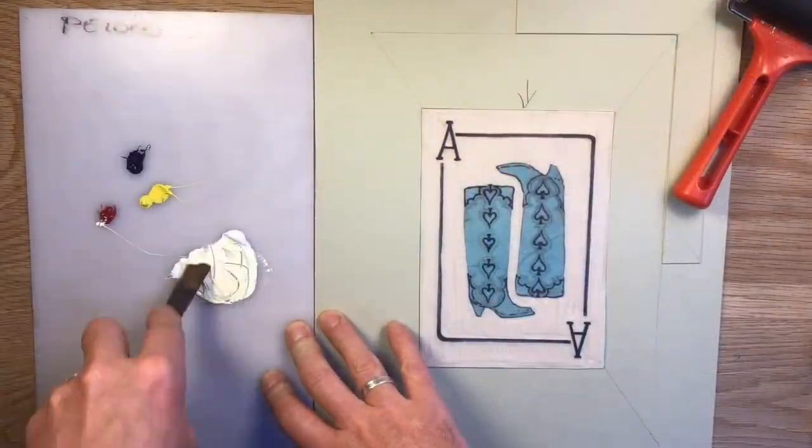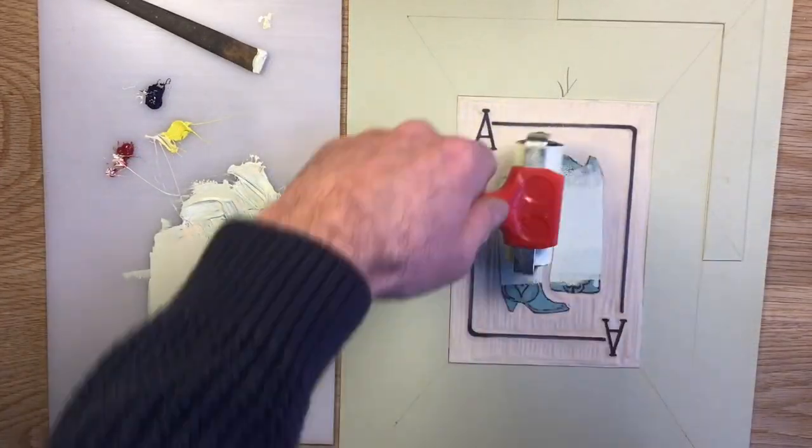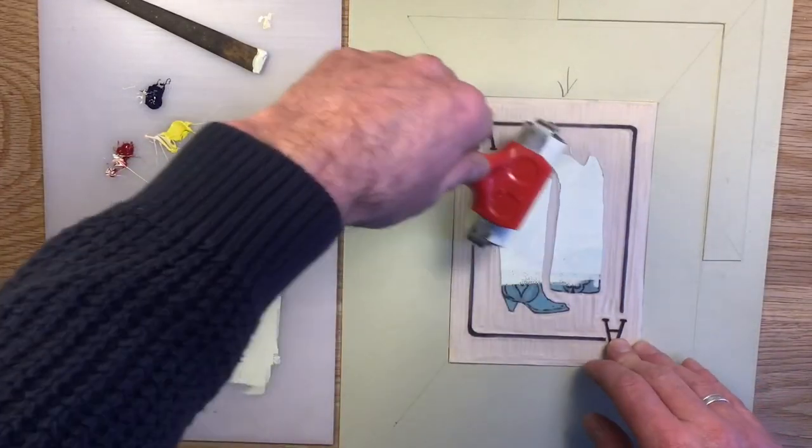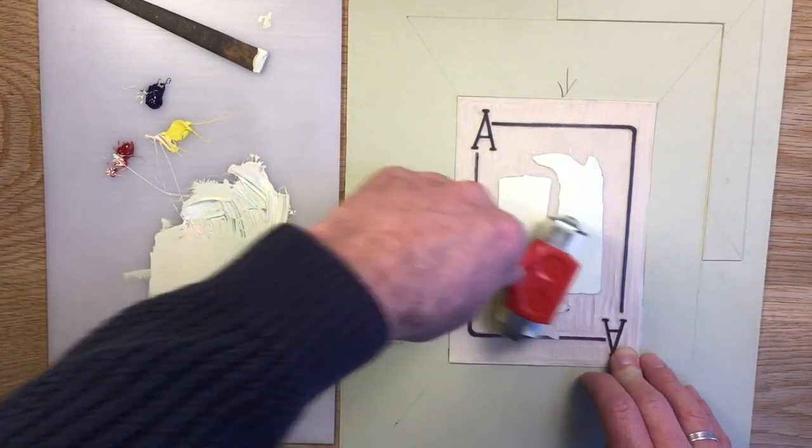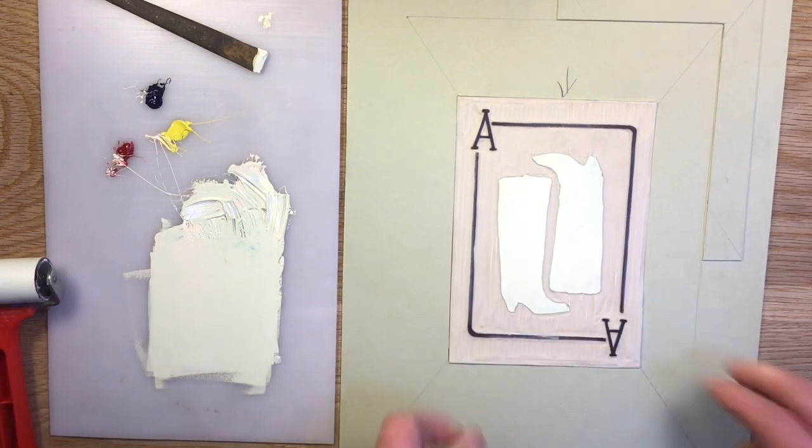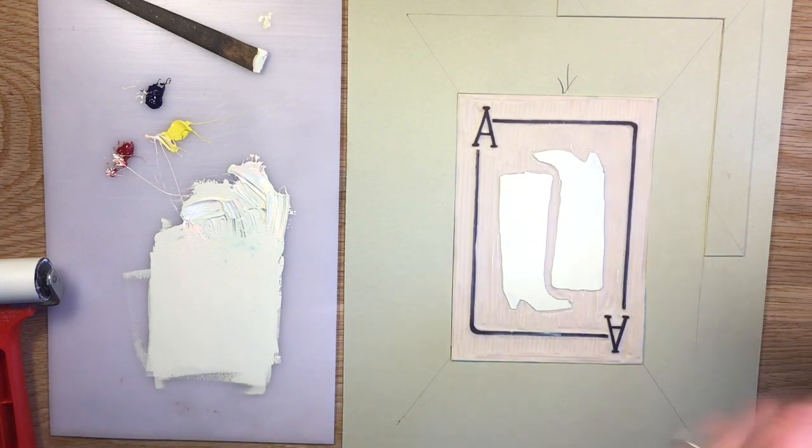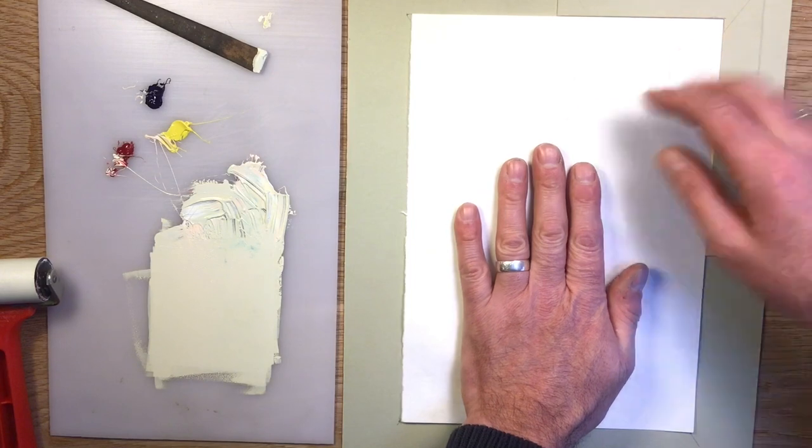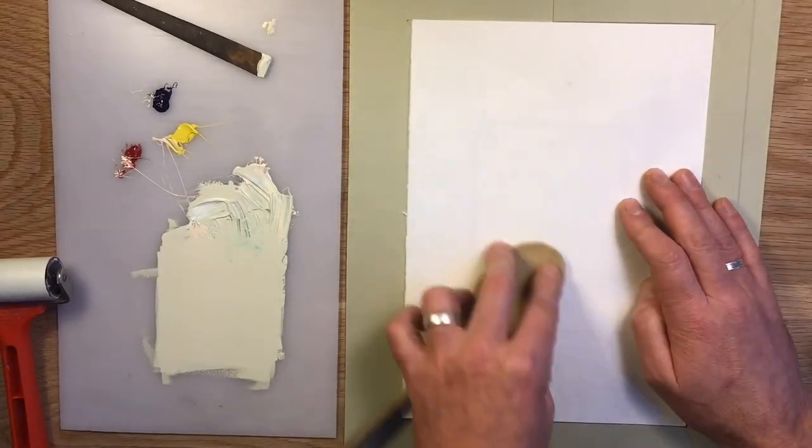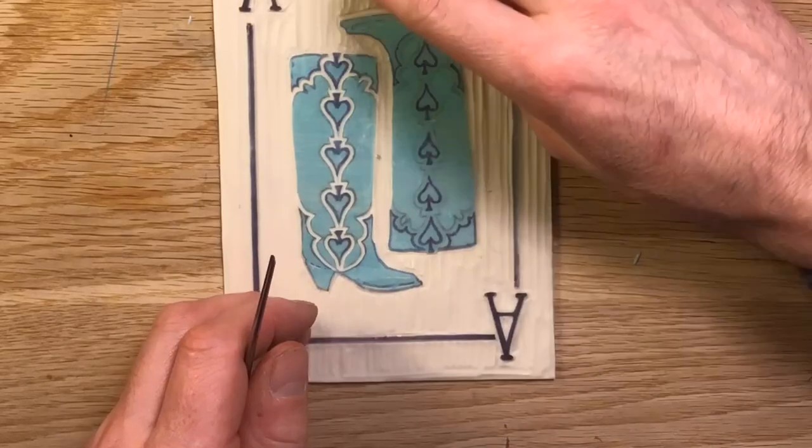Okay, nearly ready to print my first layer, which is going to be this sort of cream color. So I've removed all my background, everything that I want to retain as white. Mixing up, I'm using here, should I say, some Caligo safe wash relief printing ink. Wonderful product. I think it's vegetable oil based, so it's really easy to clean with soap and warm water. And on we go with my first print, using that registration guide, burnishing with a wooden spoon, lifting off, and a nice clean print.